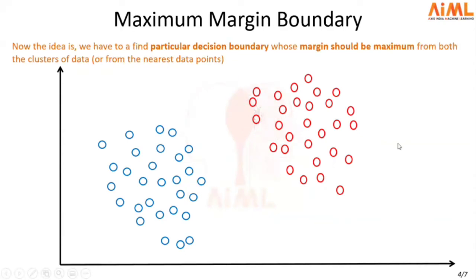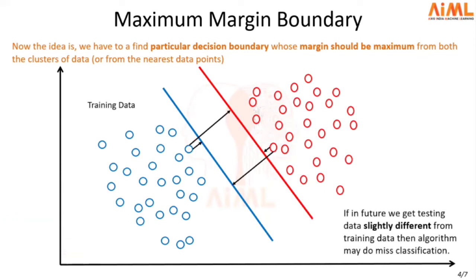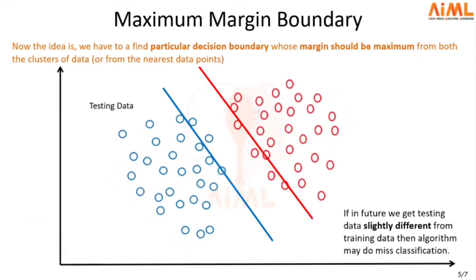Now let's try to understand the concept behind the maximum margin boundary. Suppose this is our training data, and on this training data we train the blue decision boundary. We calculate the margin from the closest data point of both the clusters, and this is going to be the margin of the blue boundary. Similarly, we have the red boundary, and we calculate the margin of the red boundary as well. If we select one of these two decision boundaries to perform classification, one of them will perform perfect classification on the training data. But if our testing data in the future becomes slightly different from our training data, this is going to lead to a lot of misclassification.